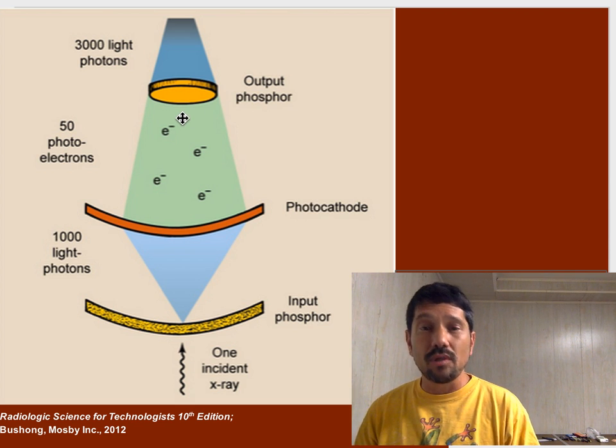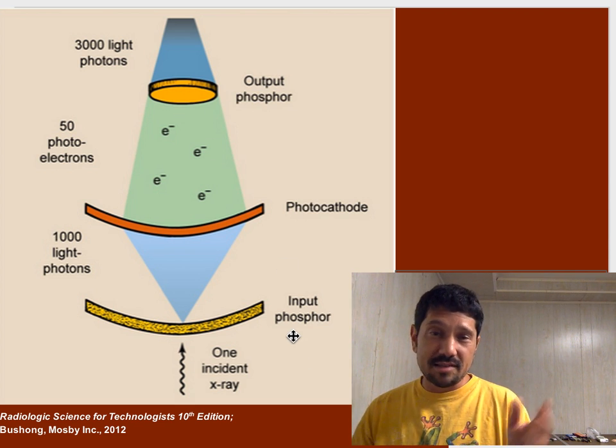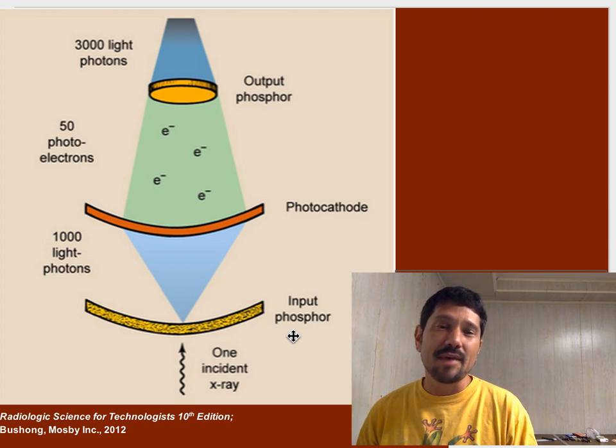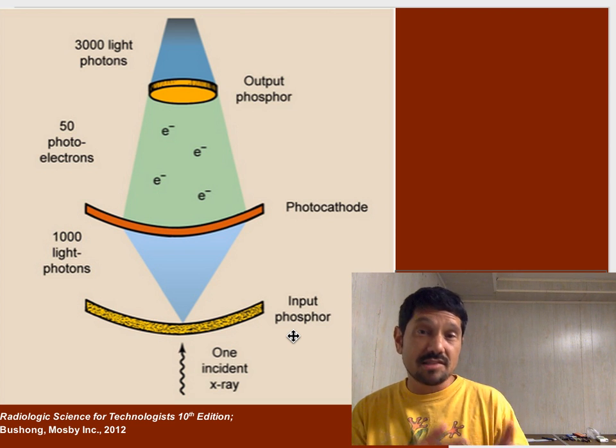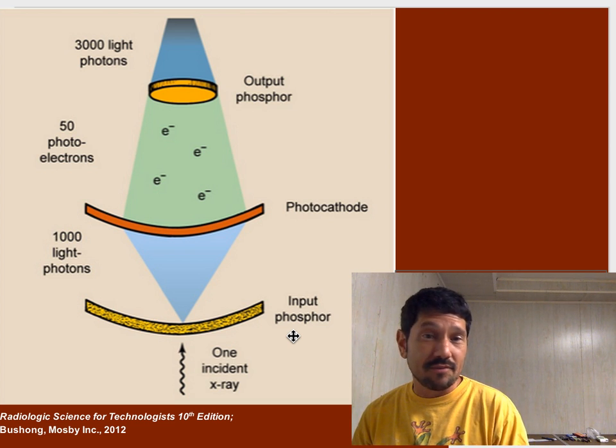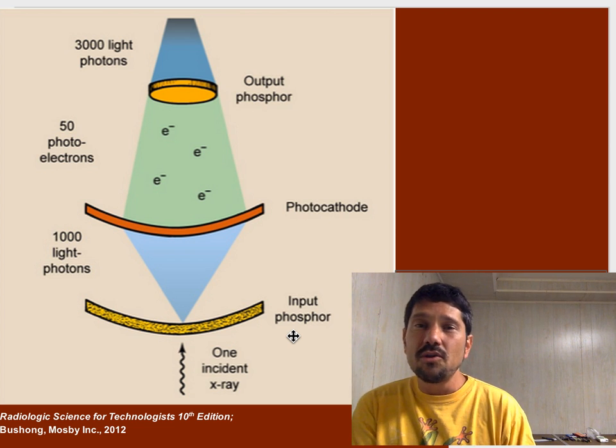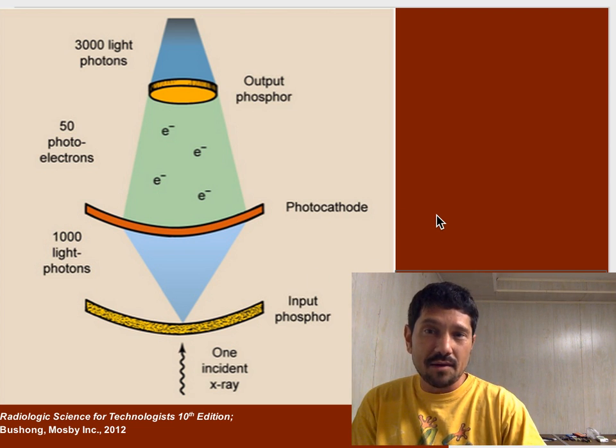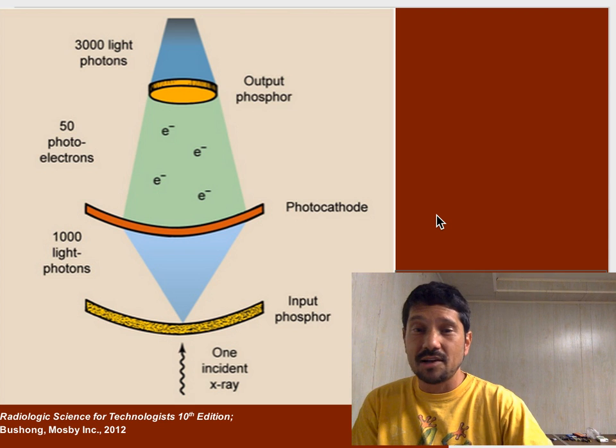And that output phosphor though, like the input phosphor, says, hey, electrons, that's great. I can make a bunch of light out of this form of energy. And it's not a one-to-one ratio. You don't get one light photon for every electron. You get lots of electrons for each, you get a lot of photons for each electron.